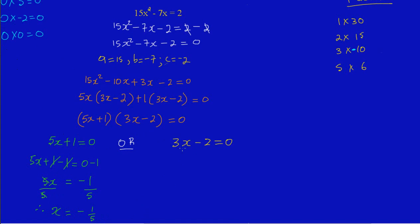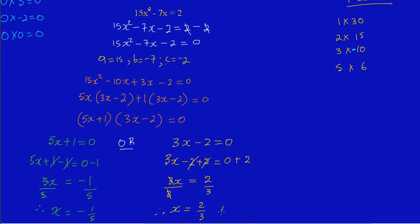For 3x - 2 = 0: since 2 is being subtracted, I do the opposite and add 2 to both sides. So 3x - 2 + 2 = 0 + 2, giving 3x = 2. Now 3 is multiplying x, so I divide both sides by 3. Therefore x = 2/3. So x has two values: x = -1/5 or x = 2/3.